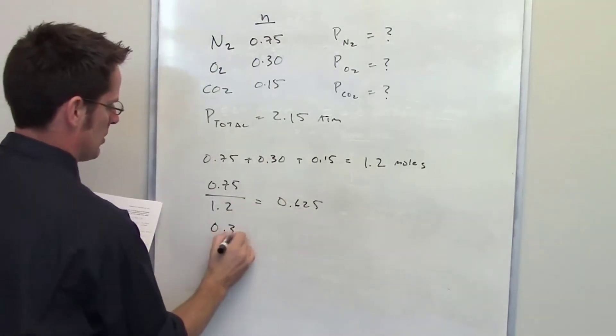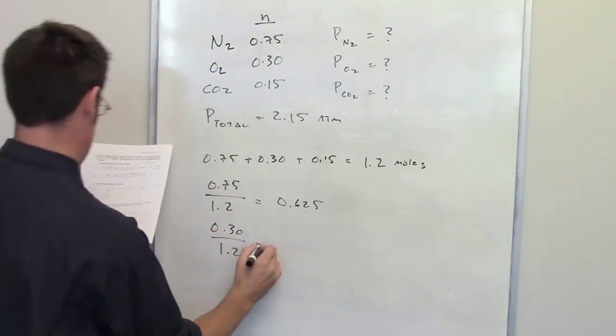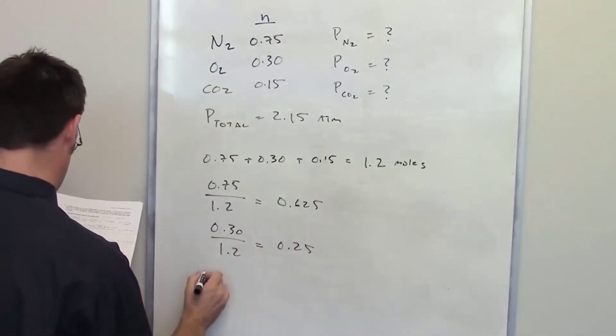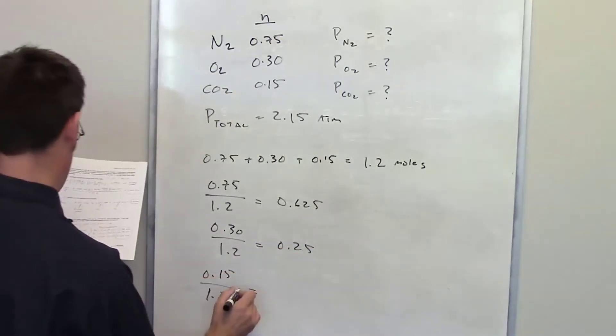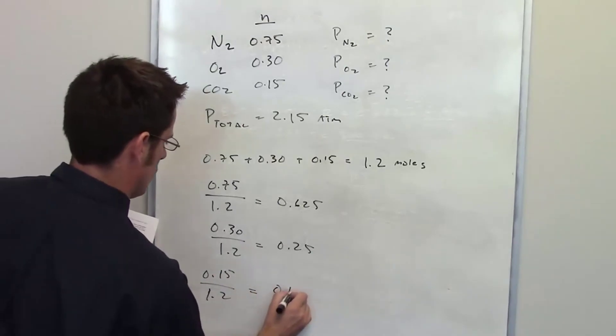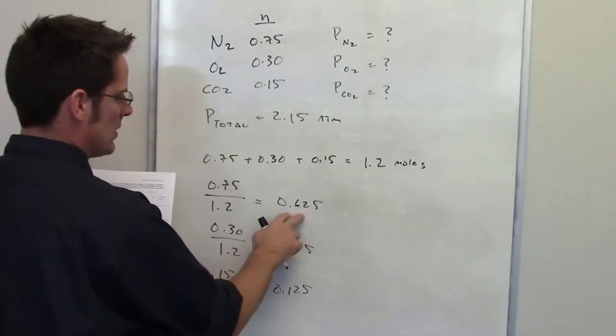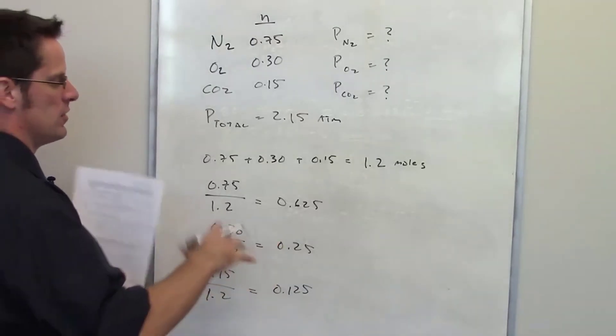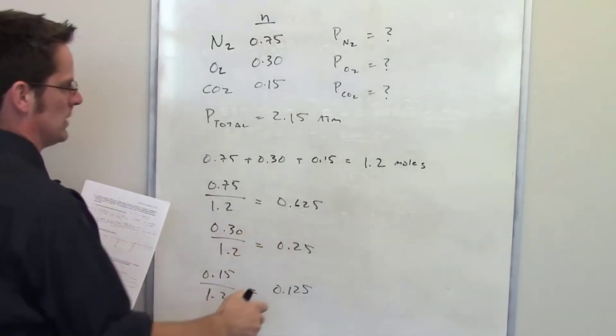By analogy, we can determine that oxygen's mole fraction is 0.25 and carbon dioxide's mole fraction is equal to 0.125. Now these are the mole fractions or mole percentages of the total number of moles for each individual gas.